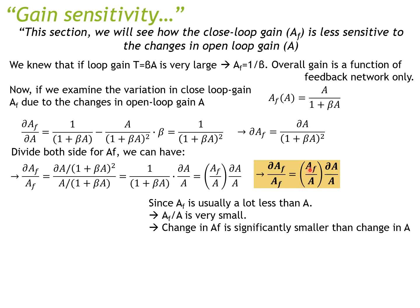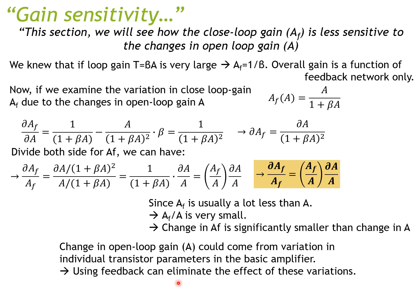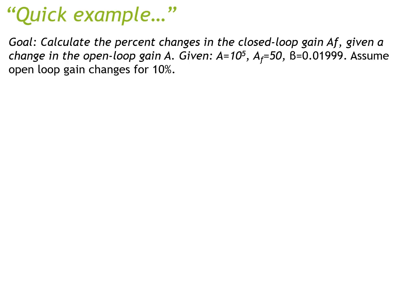Since we know that the closed loop gain is a lot smaller than the open loop gain, the fraction Af over A is very small. Therefore, the change in Af is significantly smaller than the change in A. The change in open loop gain A comes from variation in individual transistor parameters in the basic amplifier. By using feedback, we can eliminate this variation.